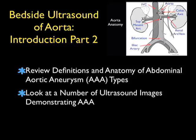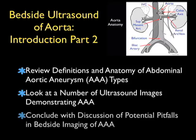We'll begin with a review of the definitions and anatomy of the types of abdominal aortic aneurysms that you may encounter in the emergency department. We'll look at a number of ultrasound images demonstrating AAAs, and we'll conclude with a discussion of the potential pitfalls in bedside imaging of an abdominal aortic aneurysm.